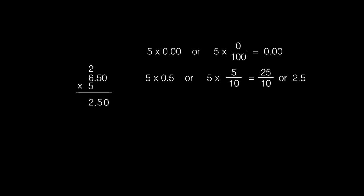Last, we will multiply the whole number 6 times 5 ones, which gives us 30. Therefore, 6.50 times 5 equals 32.50.